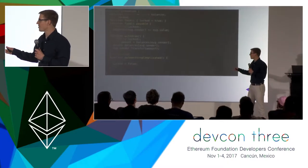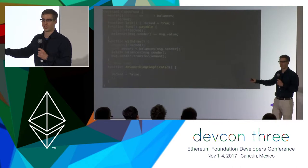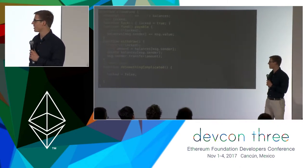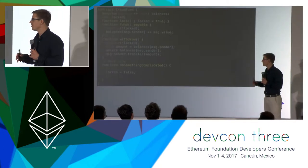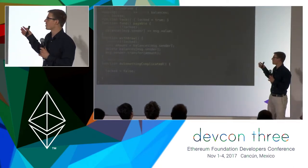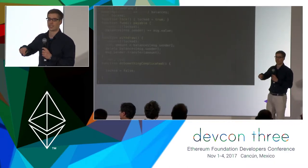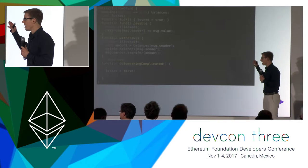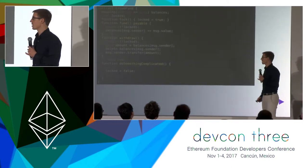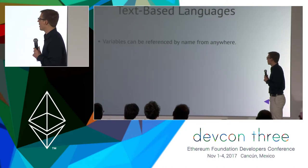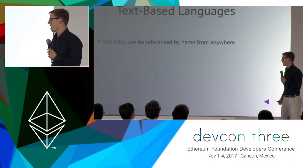The problem here is that anywhere in the smart contract you can hide this tiny line that says 'locked equals false'. So if you want to find out whether it's possible to only lock the smart contract once and not unlock it later, you have to analyze the full thing and find every occurrence of the word 'locked' inside the smart contract. I would say this is a general problem of any text-based programming language.